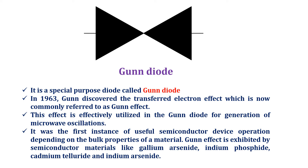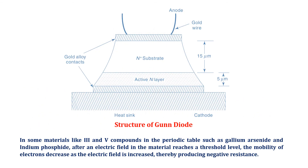The Gunn effect is exhibited by semiconductor materials like gallium arsenide, indium phosphide, cadmium telluride, and indium arsenide. The structure of a practical Gunn diode is shown in the figure. Let us see first what the Gunn effect is.